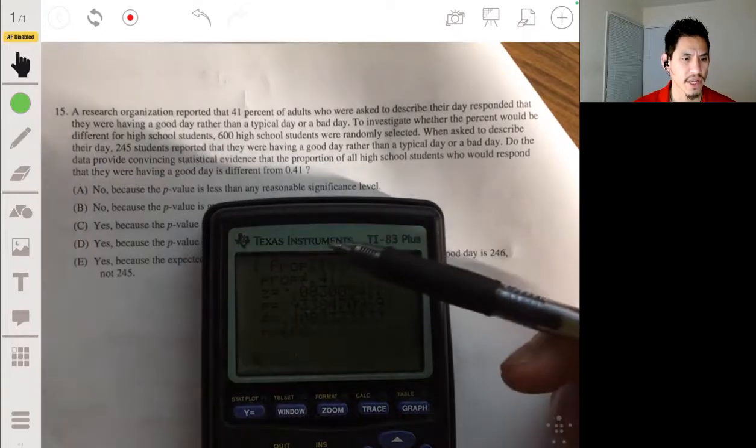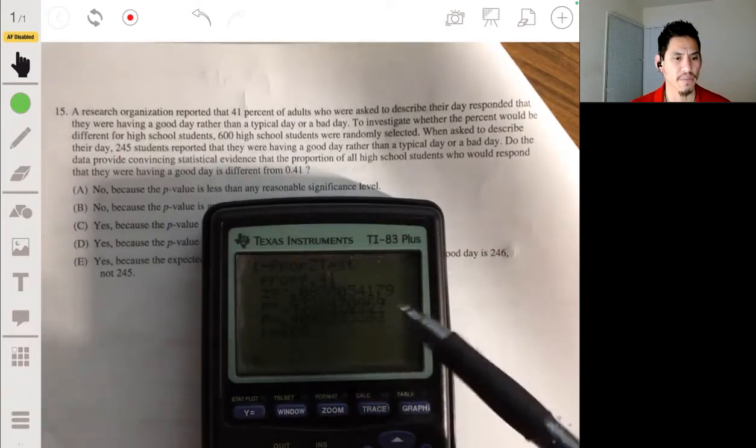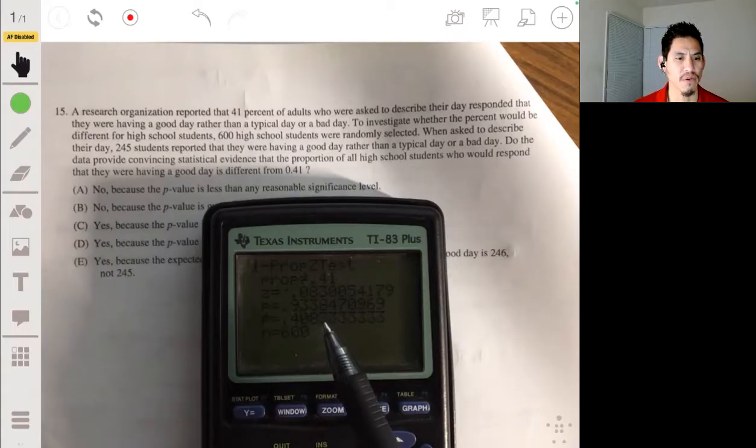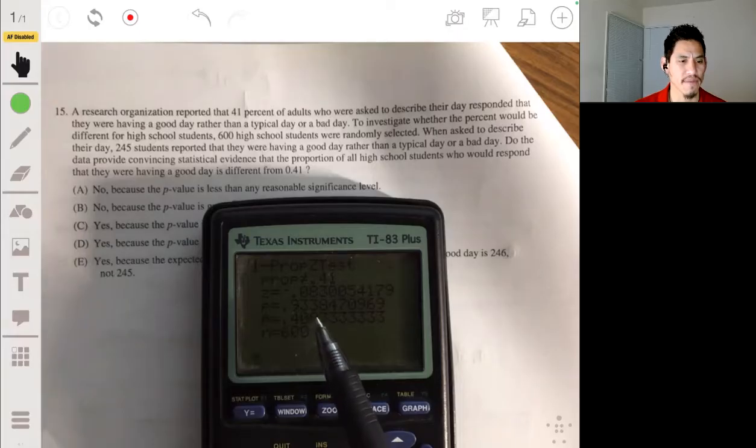And bang, we get our z, your critical value, we get our p-value, and our sample statistic. And you can see our sample statistic is pretty close. It's almost, it's like 0.01, it's like very, it's like not even a fraction, it's a fraction of a percent away.